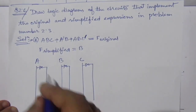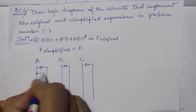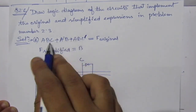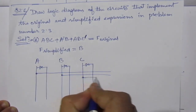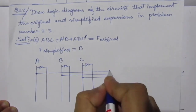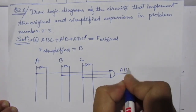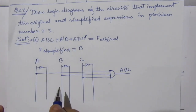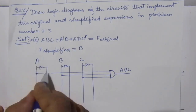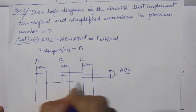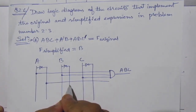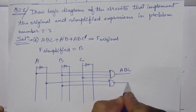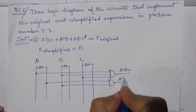The original expression is ABC + A̅B + ABC̅. For the first term ABC, take lines from A, B and C and use an AND gate — you get ABC. For the next term A̅B, take the A̅ line and B line and use an AND gate to get A̅B.